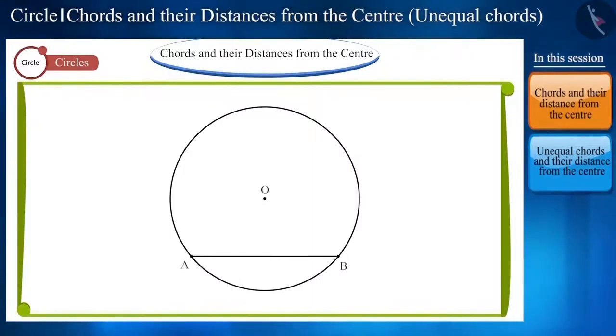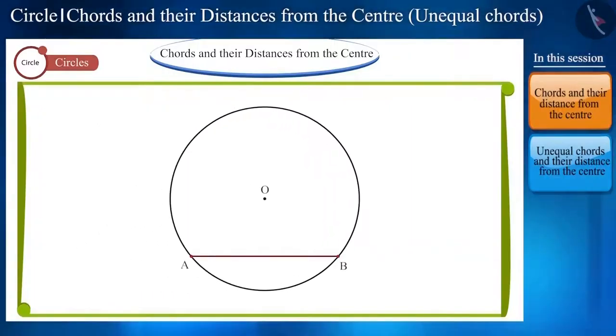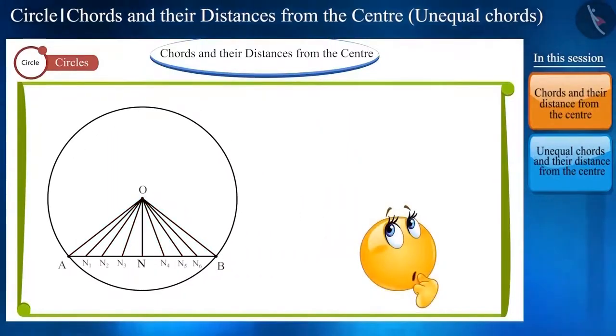Friends, we know that a line is made up of infinite points. Line segment AB is also made up of infinite points. And, you can see that center O is not situated on line segment AB. To find the distance between them, if we join the infinite points on AB with the center O, then we will get infinite line segments of different lengths. Now, think which of these line segments will tell the distance between the center O and the chord AB.